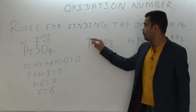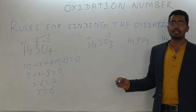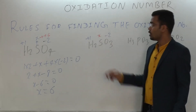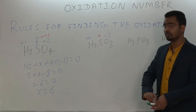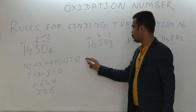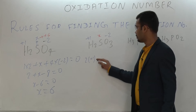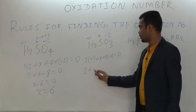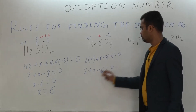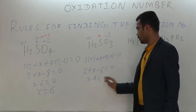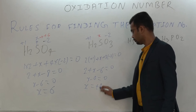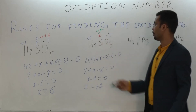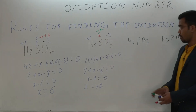For H₂SO₃, all are non-metals, so hydrogen has +1 and oxygen has −2. We do not know the sulphur, so put it as x. The net sum of charges must equal 0: 2×(+1) plus x plus 3×(−2) equals 0, giving x equals +4. So the oxidation state of sulphur in H₂SO₃ is plus 4.